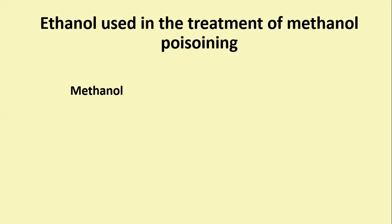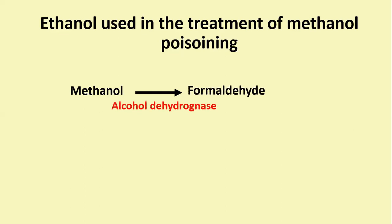Methanol is metabolized by the enzyme alcohol dehydrogenase into formaldehyde, then further metabolized to formic acid and formate, which are even more toxic as they inhibit mitochondrial cytochrome C oxidase, leading to cellular hypoxia and metabolic acidosis.